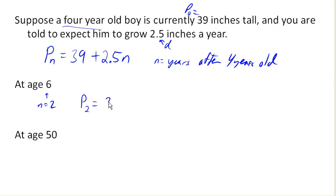P sub 2 is going to be 39 plus 2.5 times 2. 2.5 times 2 is 5. Add that on, and we get 44 inches tall, which is probably very reasonable for a prediction.